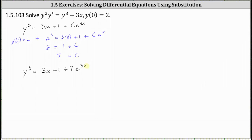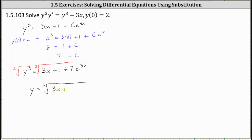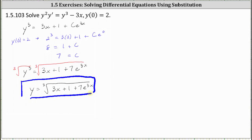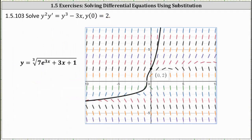While this is the particular solution, let's write y as a function of x by taking the cube root of both sides of the equation. This gives us the particular solution y equals the cube root of the quantity three x plus one plus seven e to the three x. Let's verify our solution by looking at the slope field as well as the point zero comma two given by the initial condition. Here we have the graph of the particular solution — notice how it passes through the point zero comma two and fits nicely in the slope field.